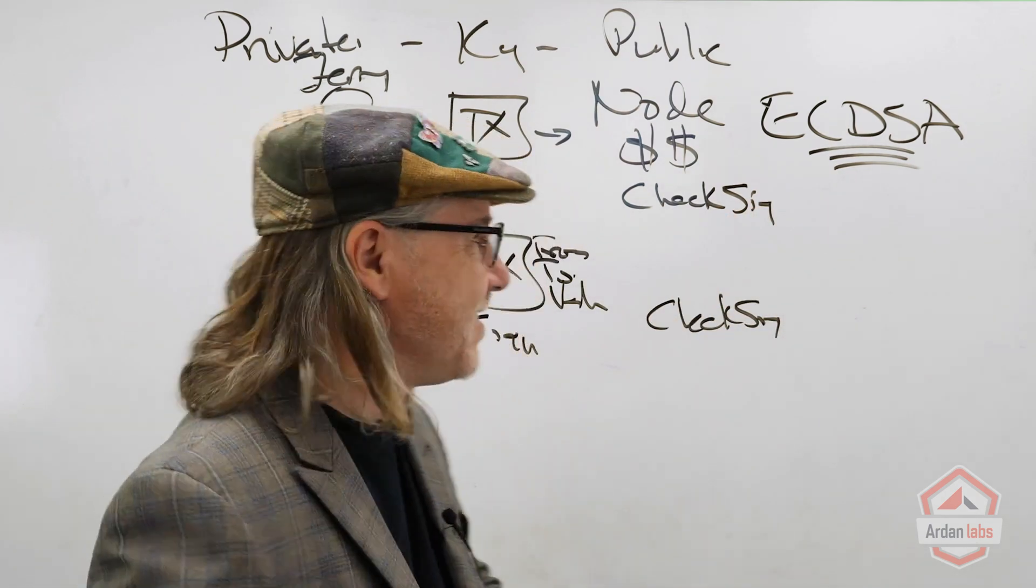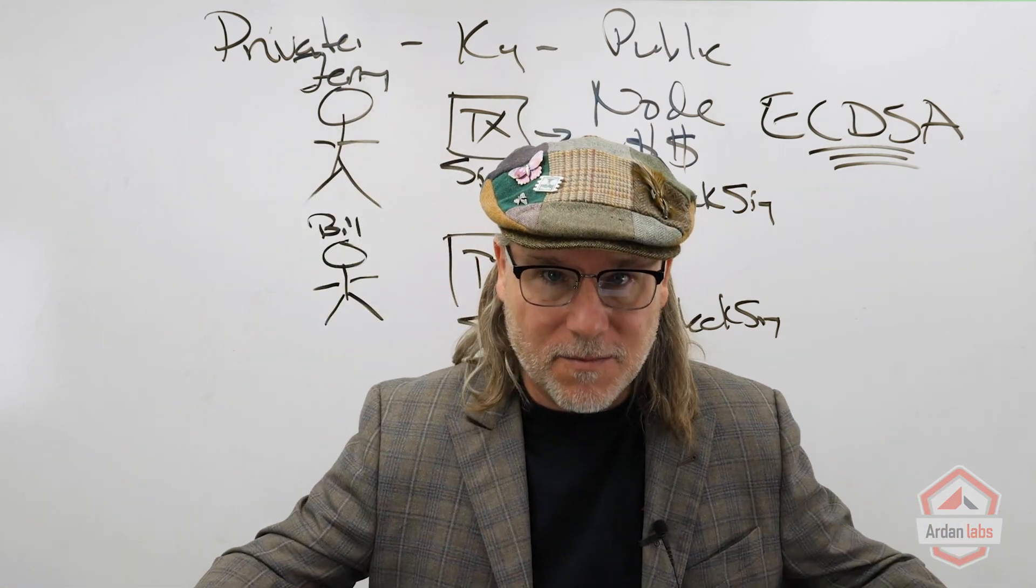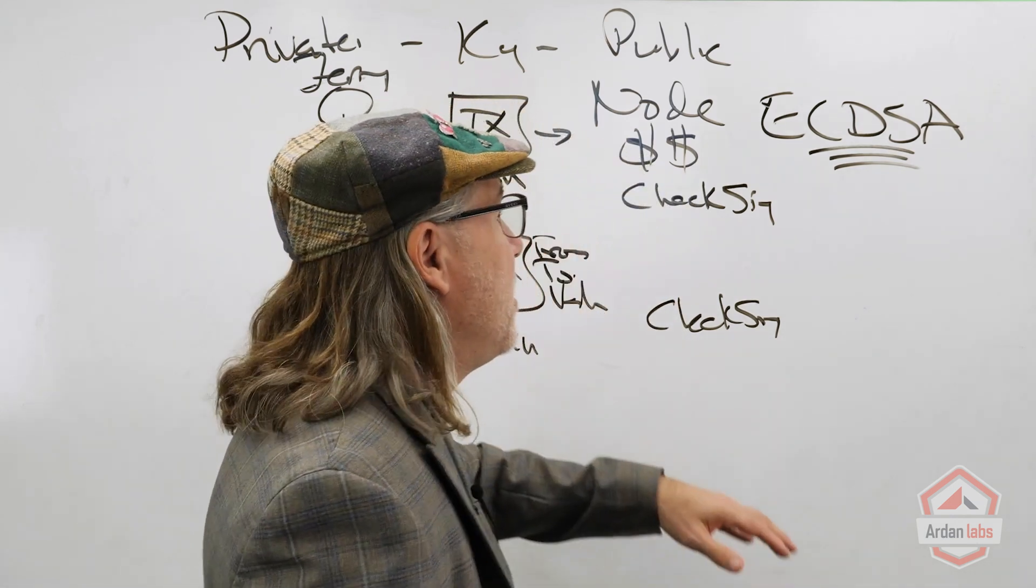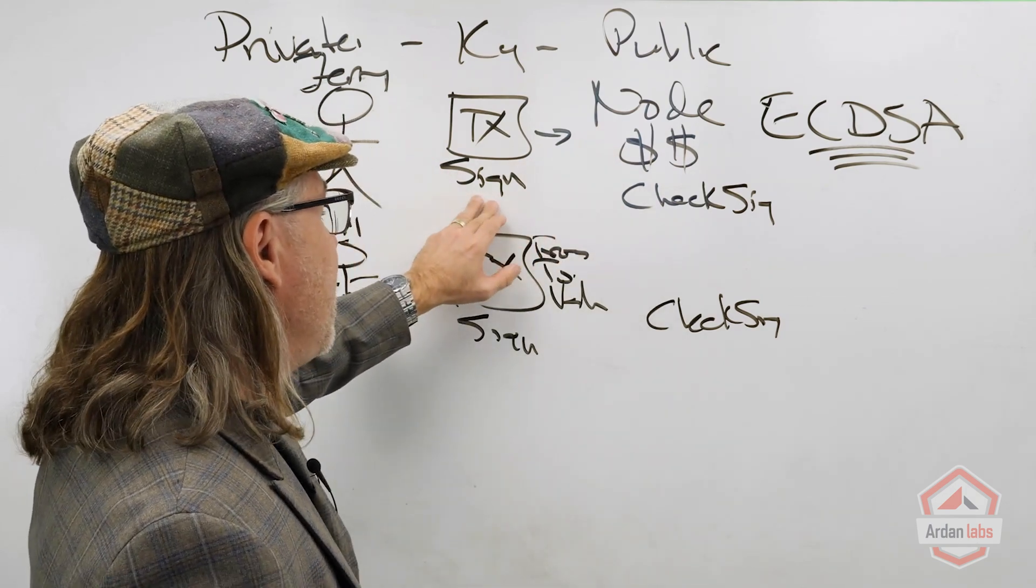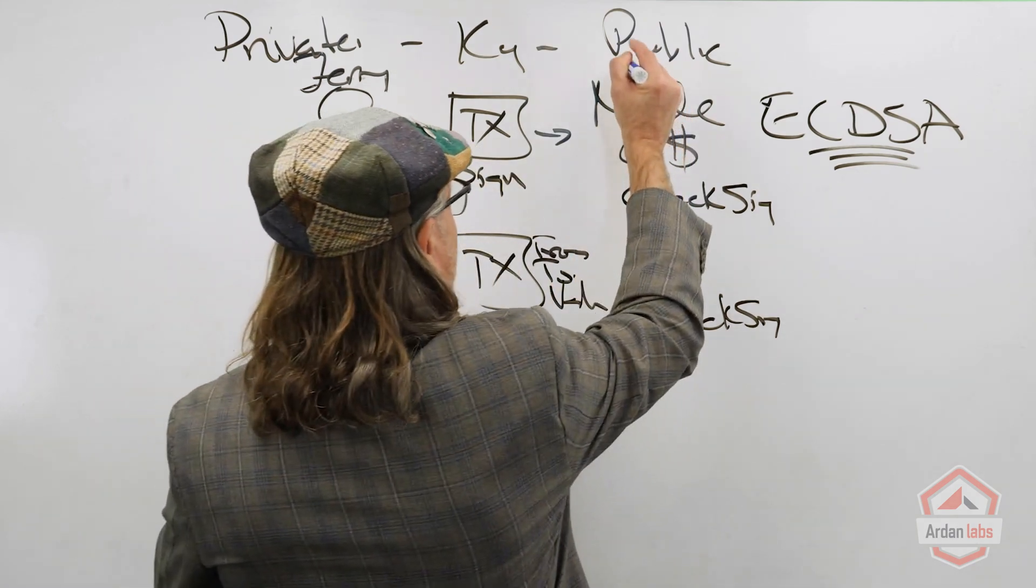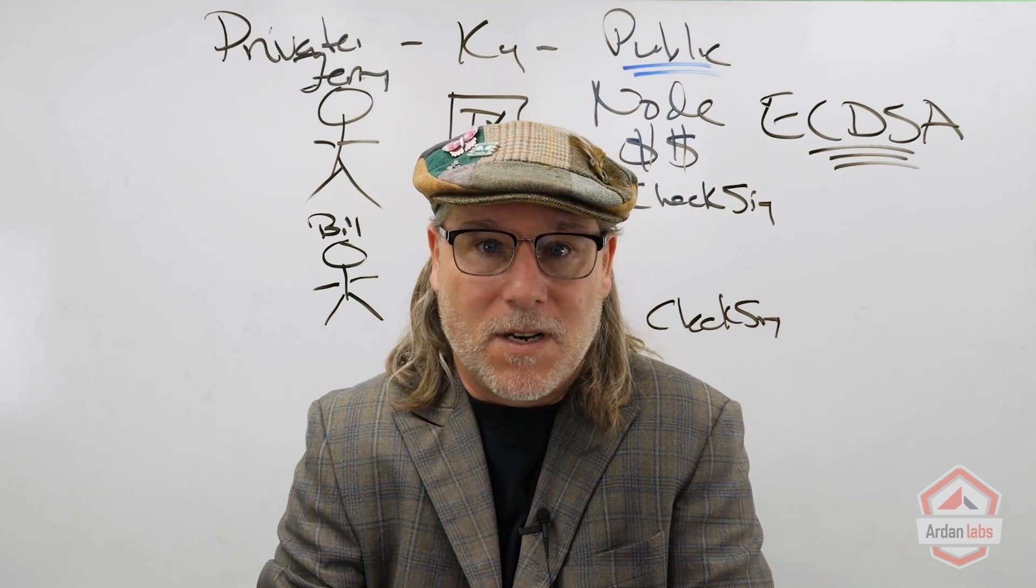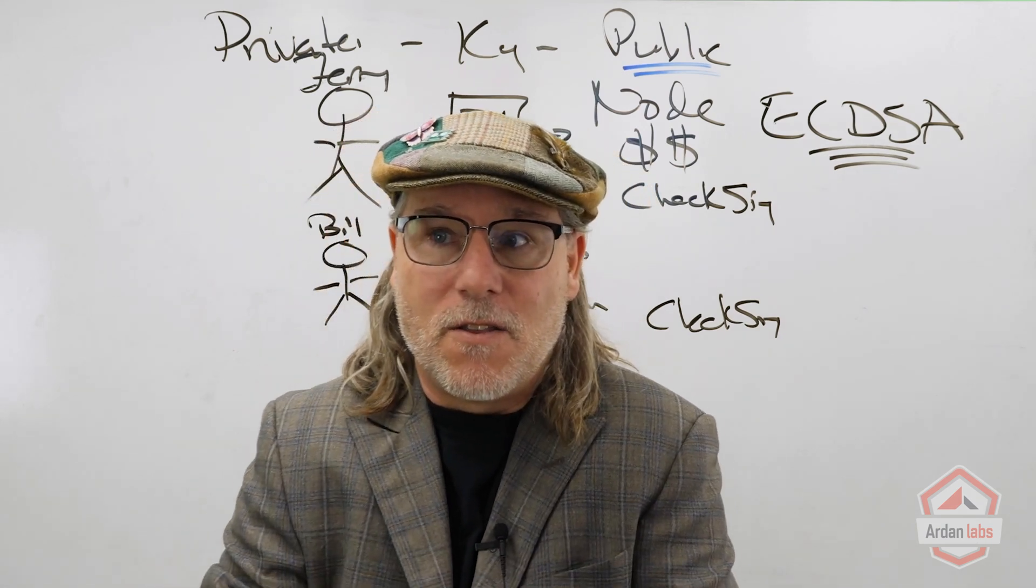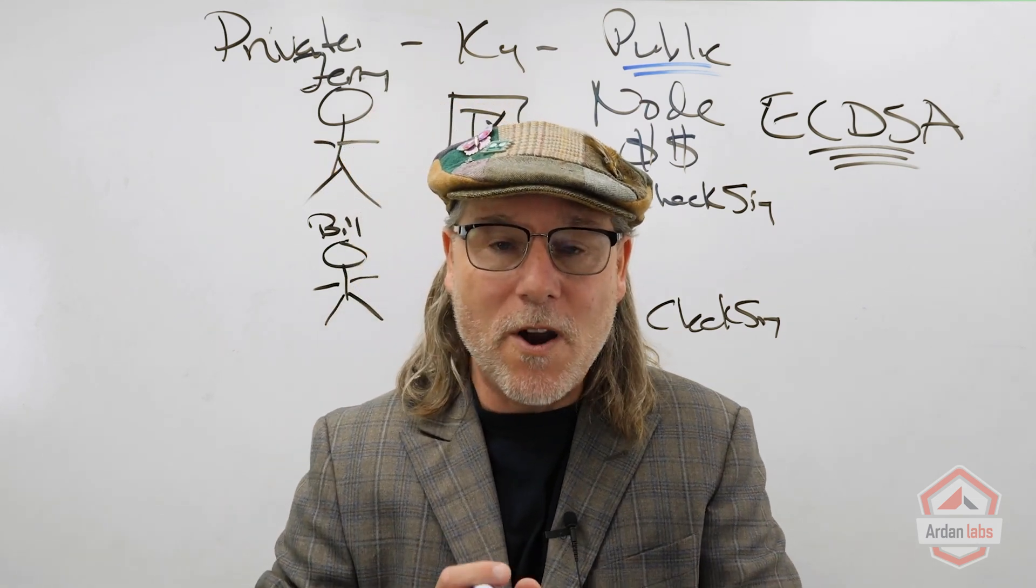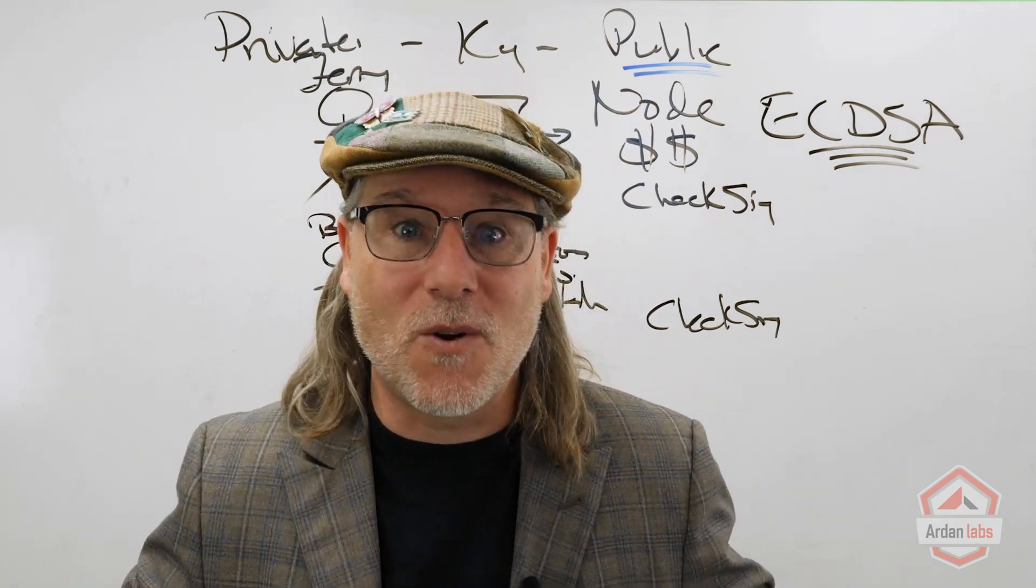Think about the problem here. This is supposed to be an open, distributed, decentralized system. The node, in order to check the signature, needs the public key. Think about the problem—this is a decentralized system. There's no 'go create an account and load my public key in it.' There's nowhere for the node to even go find your public key. There's no registration, there's no key store.